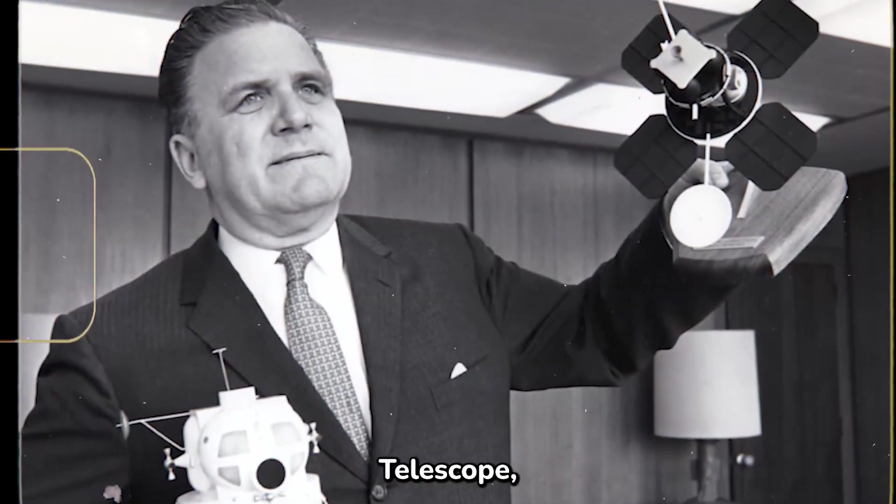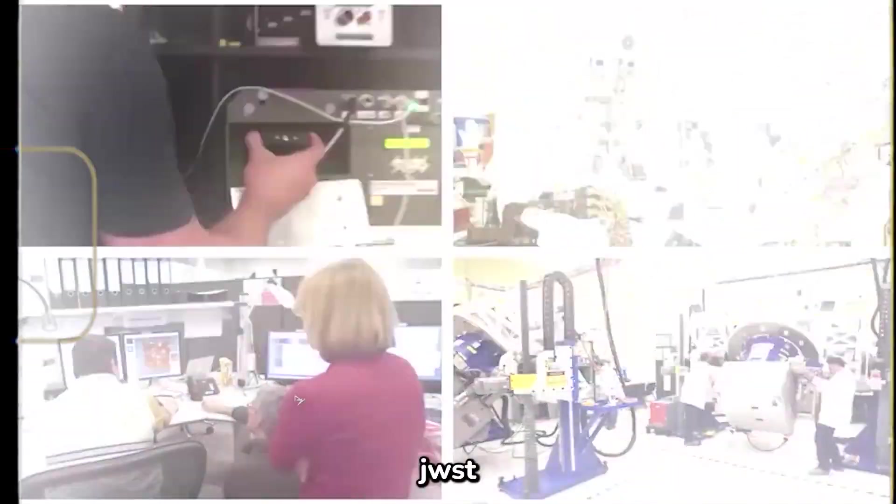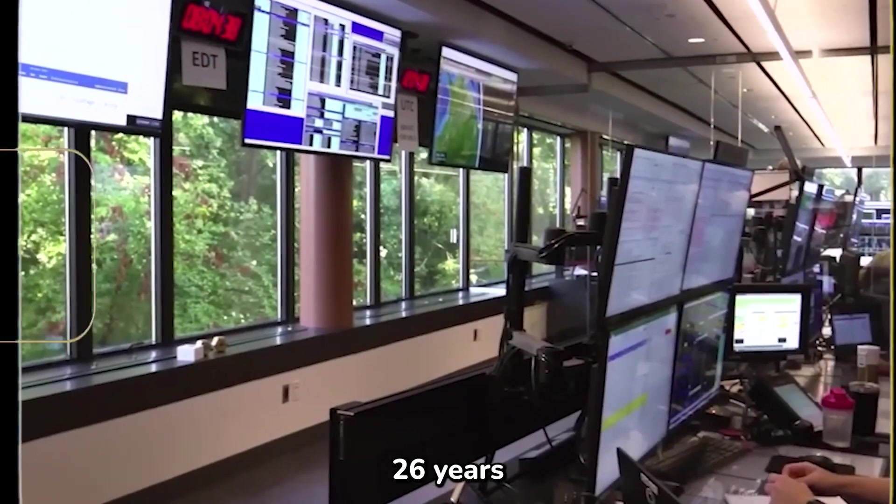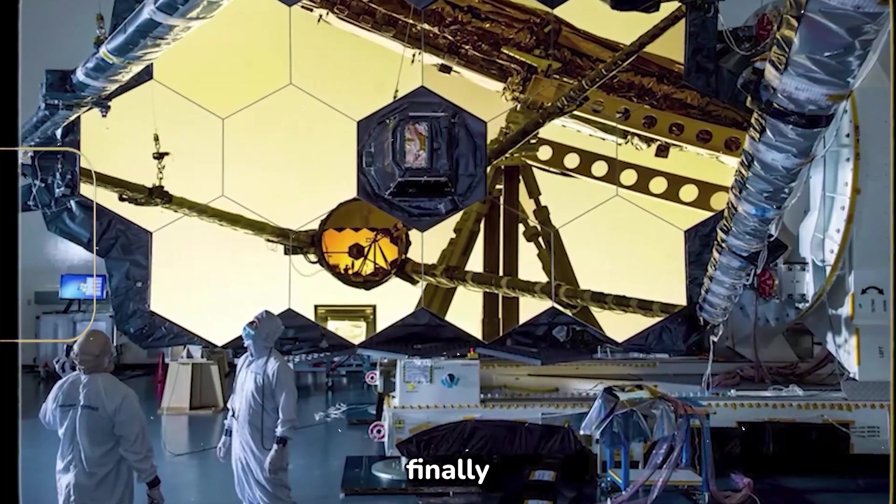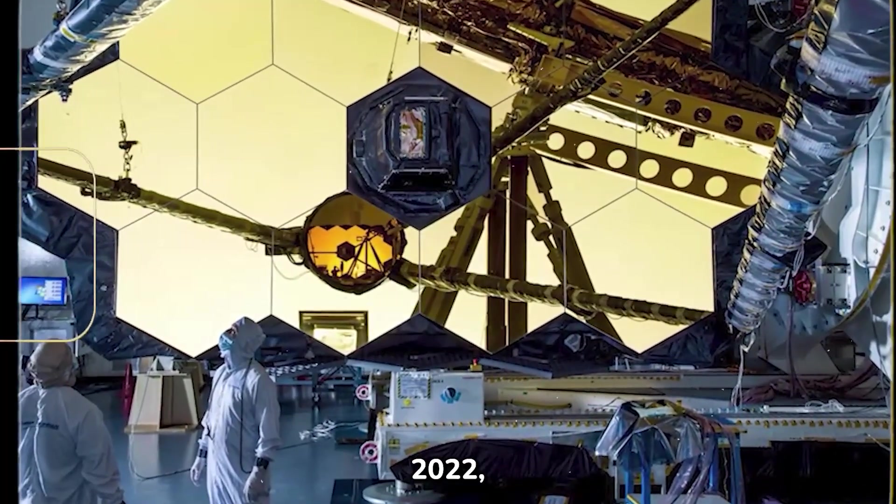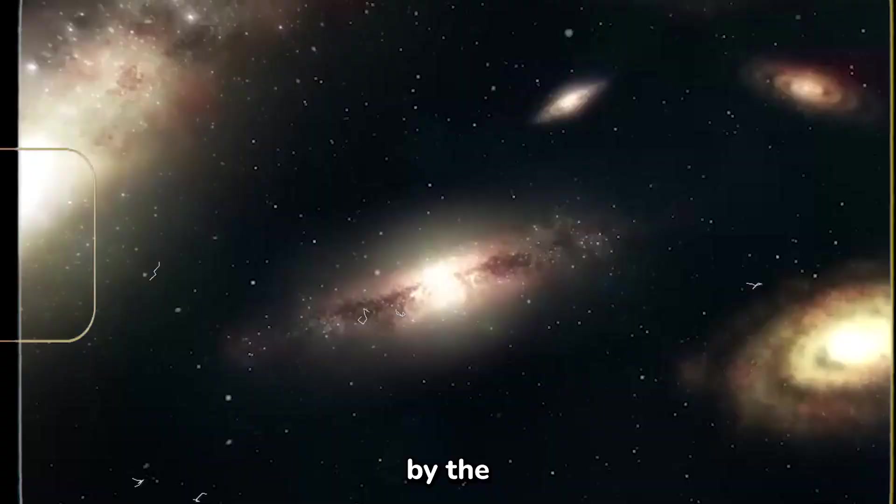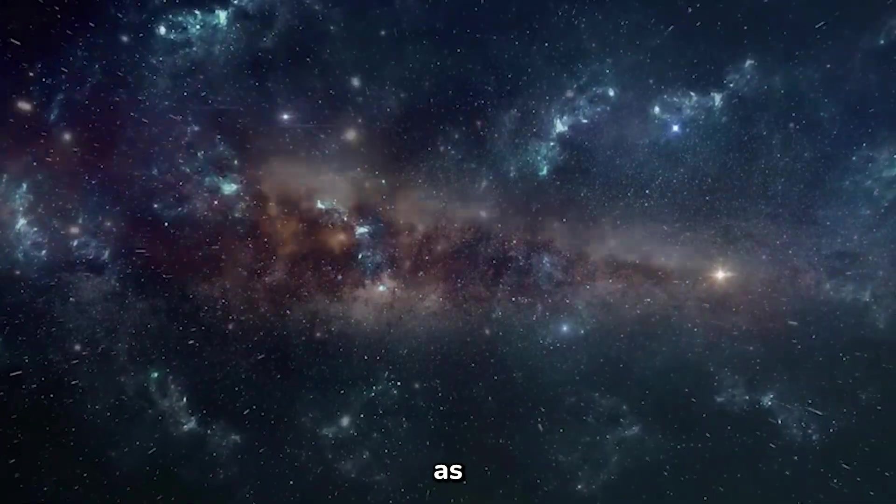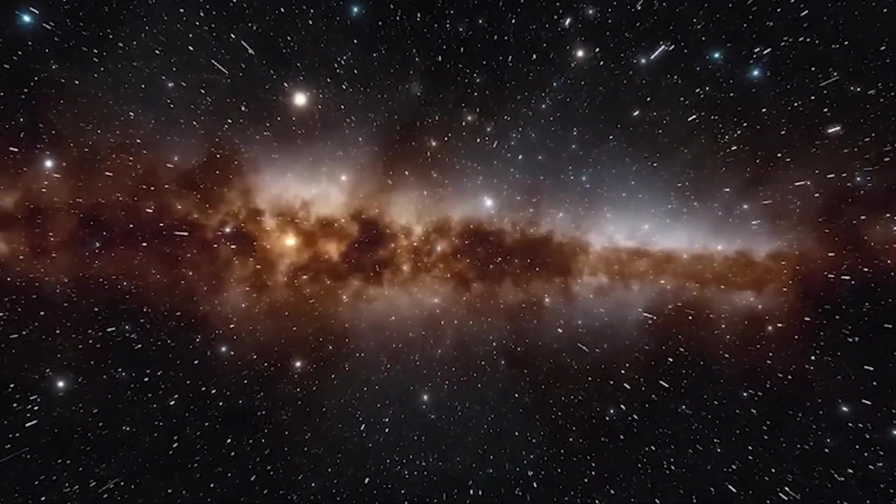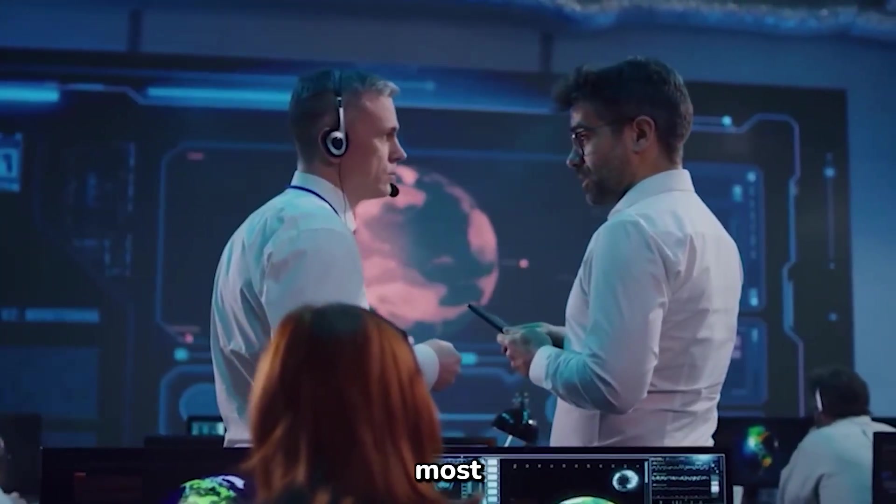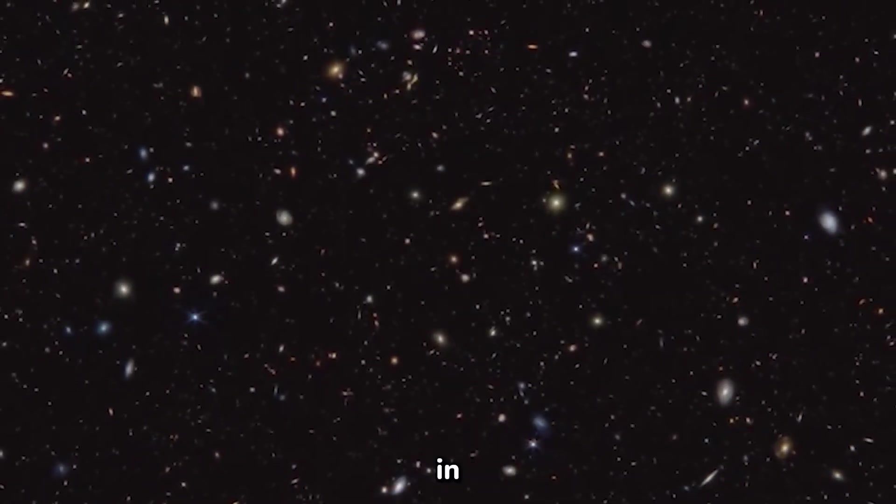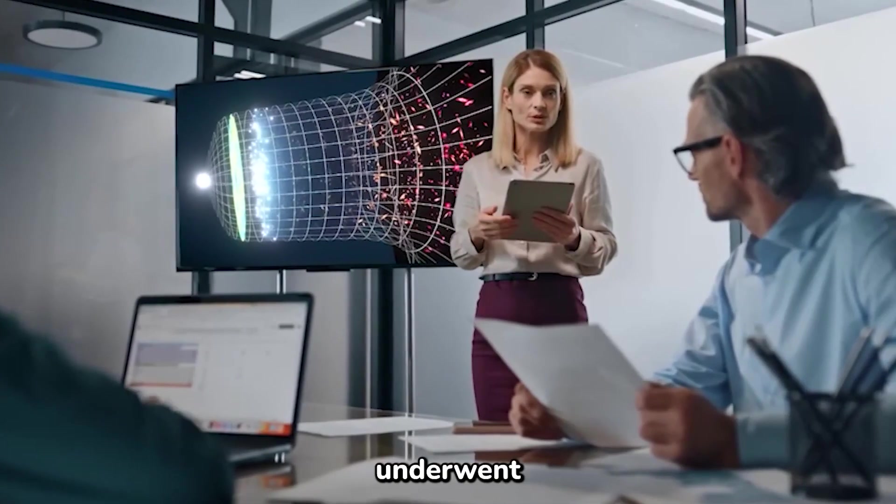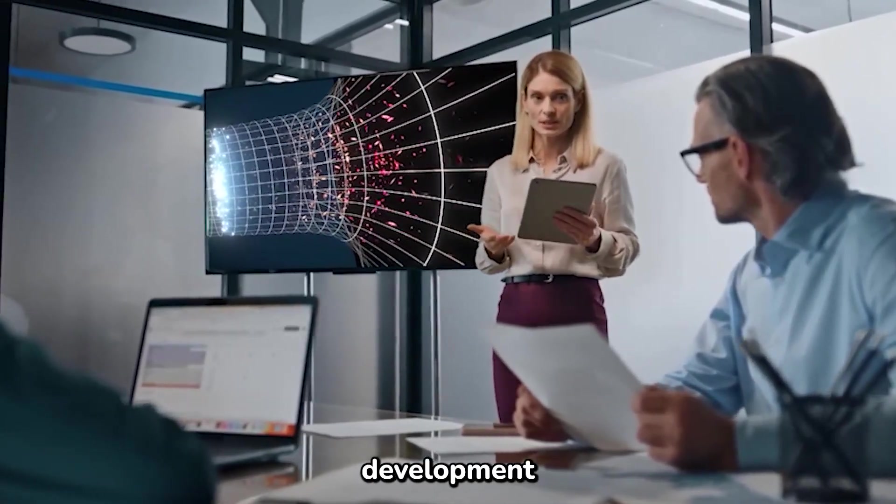The James Webb Space Telescope, also known as the JWST, was developed over the course of 26 years and was finally unveiled on July 11, 2022, by the National Aeronautics and Space Administration, or NASA. The telescope was hailed as the most powerful space telescope in history, named after NASA's second director.